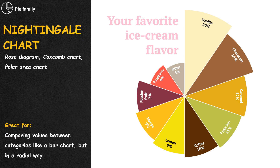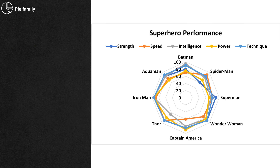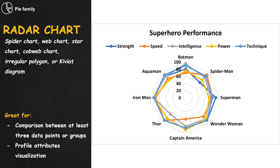The nightingale chart looks very similar to the pie chart, but it is not. Every slice takes the same percentage, but the radius of each slice represents the value between categories — it's essentially a bar chart that sticks to the circle center. One less confusing variation of the nightingale is the radar chart, where each slice becomes just one point, often connecting with the others.